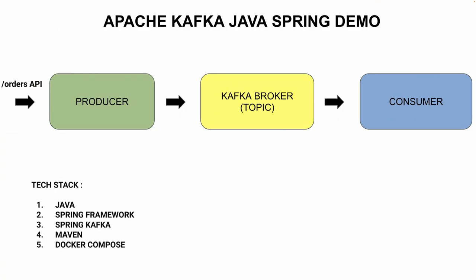I'm going to talk about a small Java Spring application — a product with a REST API. When we hit the API, the producer will post a message with the request body to a Kafka broker, a Kafka server, on an order topic.